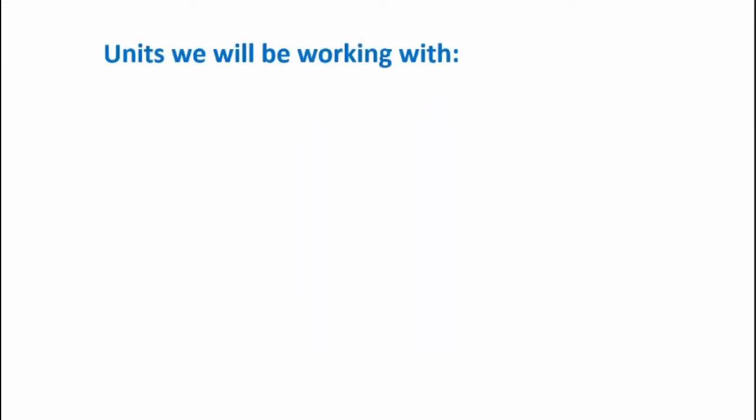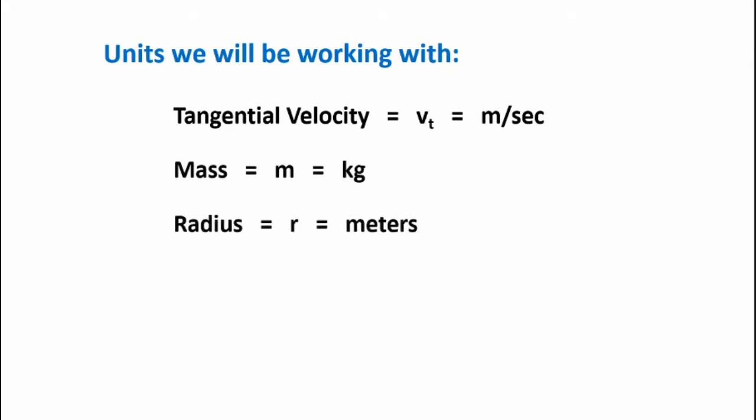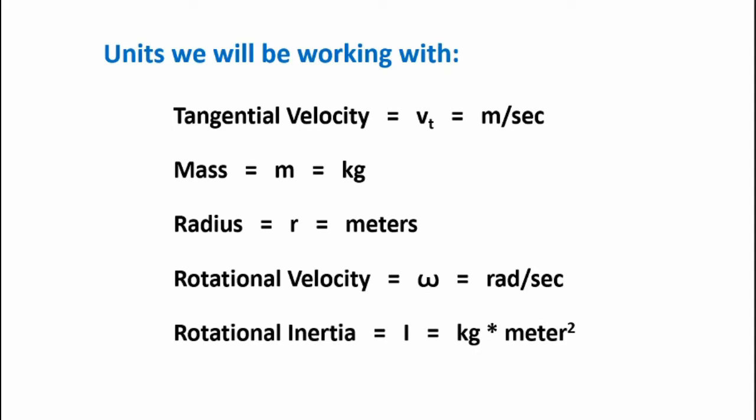Now let's look at the units we'll be working with. Tangential velocity v sub t is going to be in meters per second. Mass m is going to be in kilograms. Radius r is going to be in meters. Rotational velocity small omega is going to be in radians per second. Rotational inertia i is going to be in kilograms meters squared.